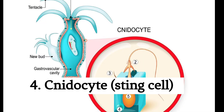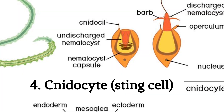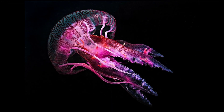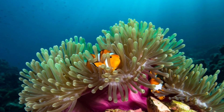4. Specialized Stinging Cells: Cnidarians possess specialized stinging cells called cnidocytes. These cells contain nematocysts, which they use for prey capture and defense. Examples include jellyfish and sea anemones.